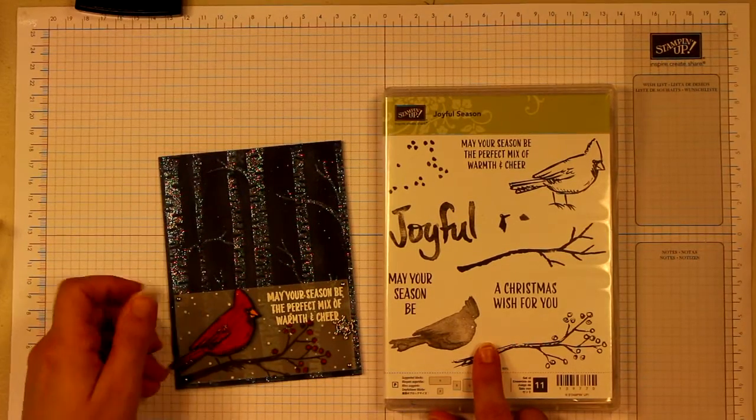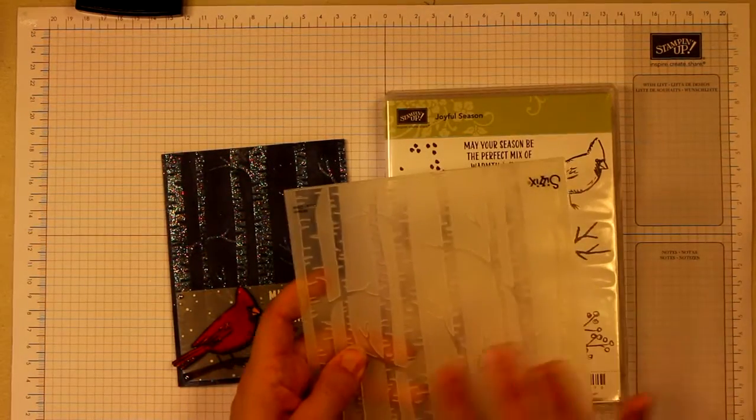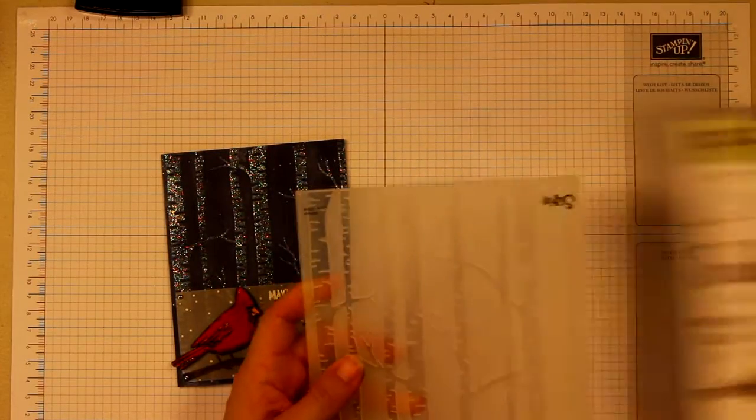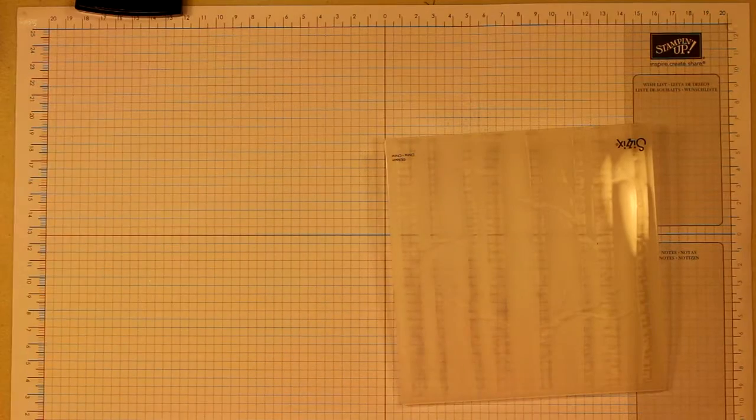This is the stamp set I used, it's called Joyful Season, and this is the embossing folder I used with the trees. I have been using this a ton, it is a really cool one.